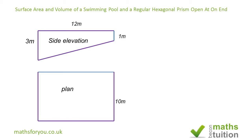The swimming pool is a good example of an everyday prism because the cross-sectional area is constant from one end of the width of the swimming pool to the other. This trapezium-shaped side elevation continues all the way from one end of the width to the other, so because you've got a constant area right through, it is in fact a prism.